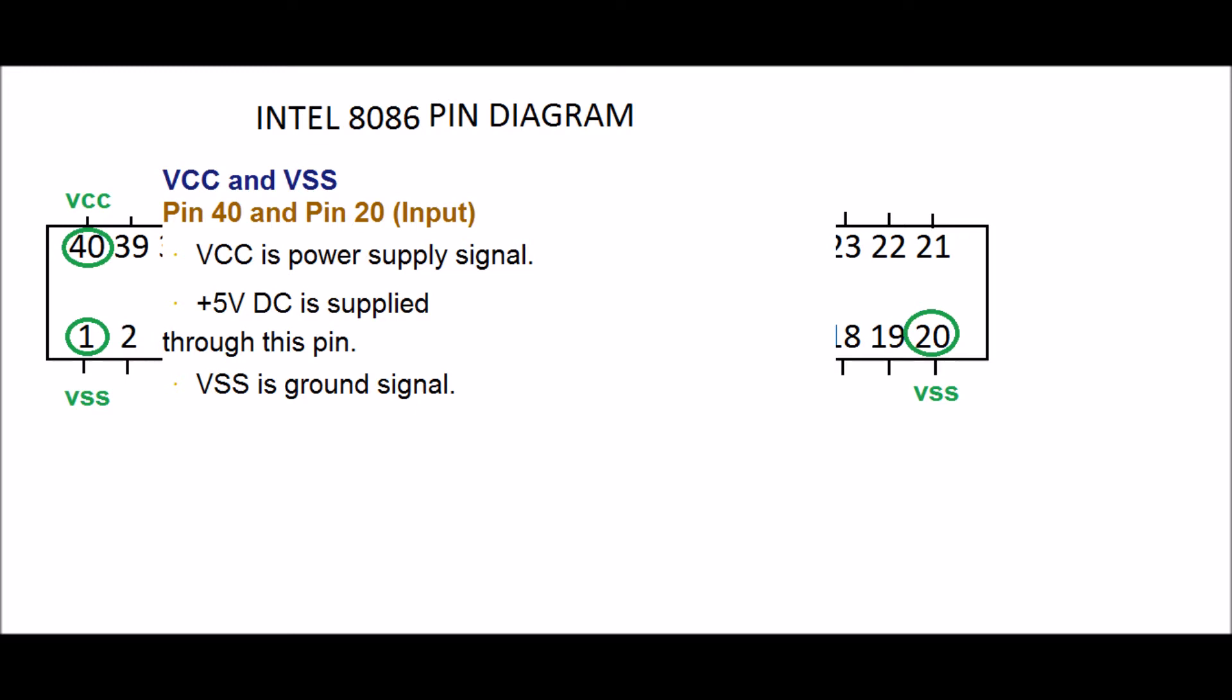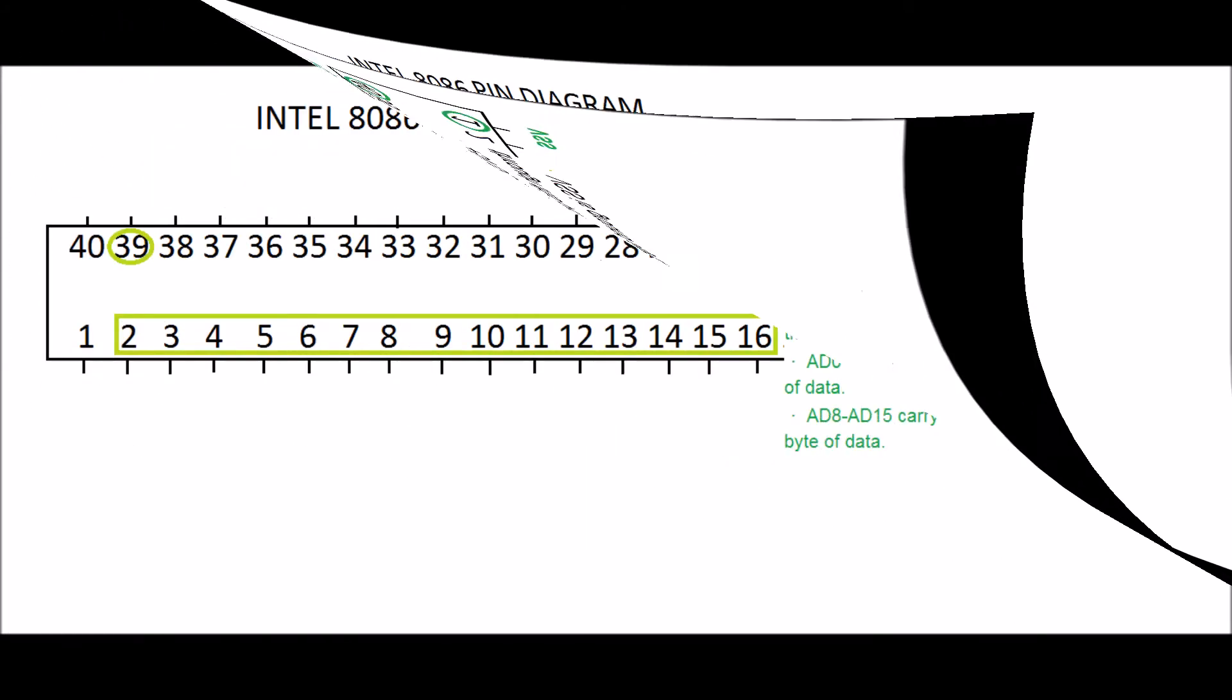PIN 40 is the VCC pin which means power supply signal. Plus 5 volts DC is supplied through this pin.